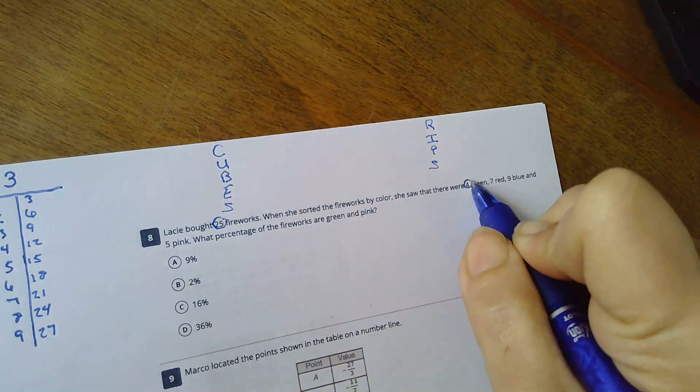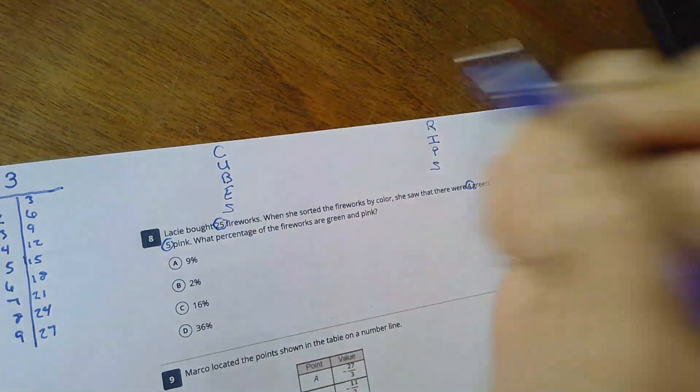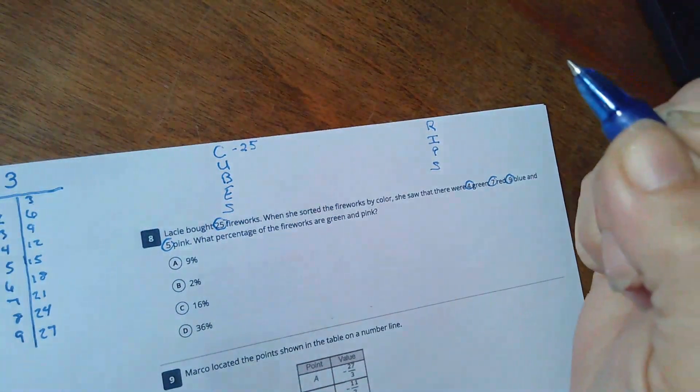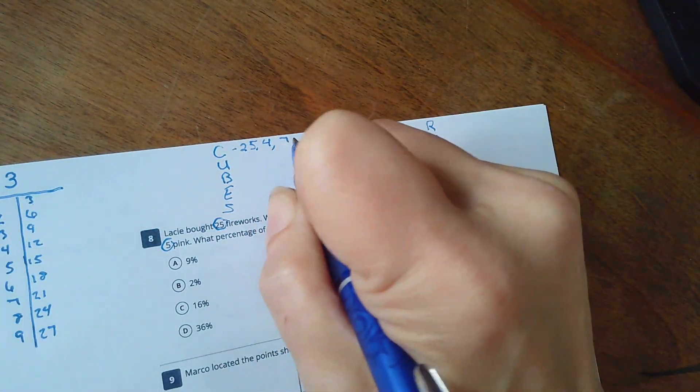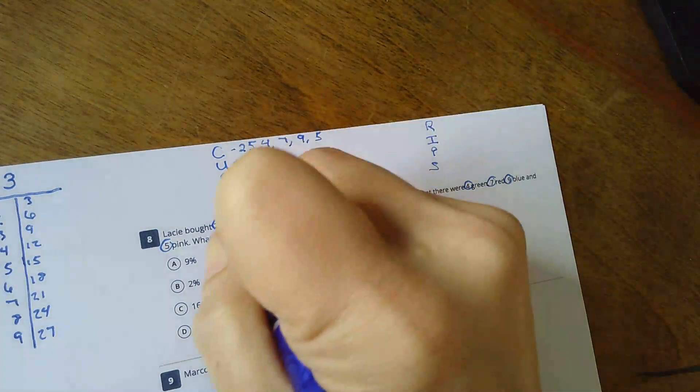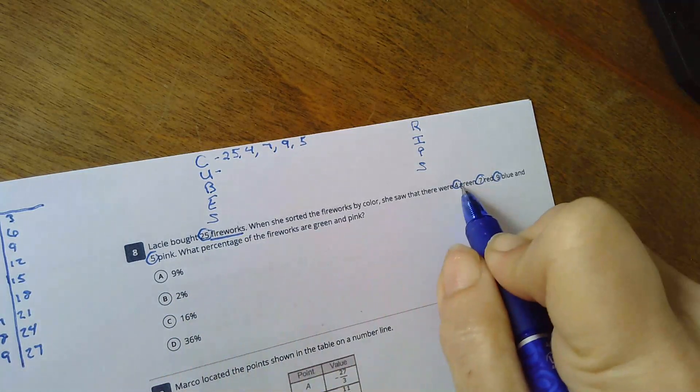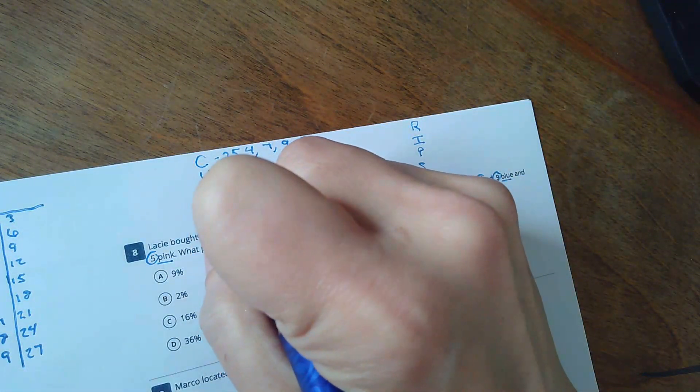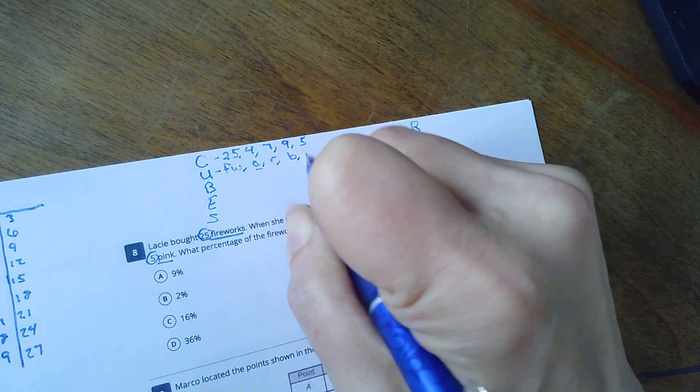Okay, 25, four, seven, nine, five, right? Remember, we write it down because we are on the computers. So I'm writing down the numbers that I need, or could possibly need. Fireworks, green, red, blue, pink. Green, red, blue, pink. Okay.